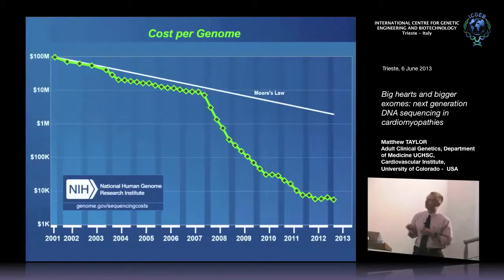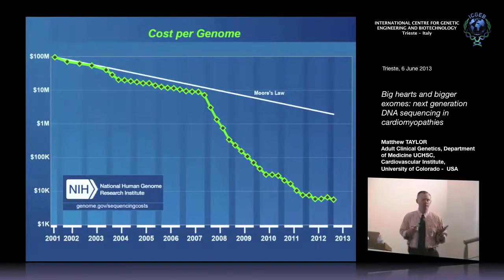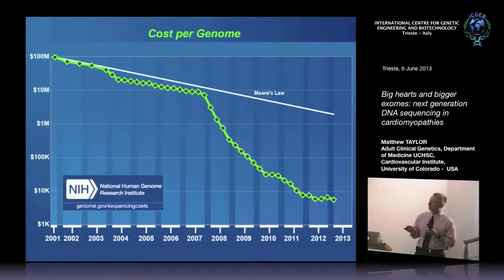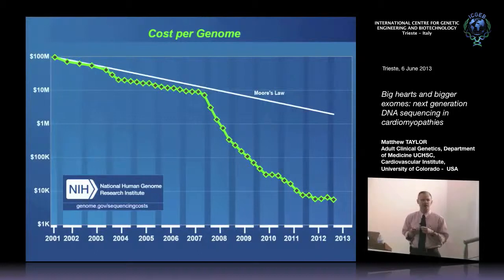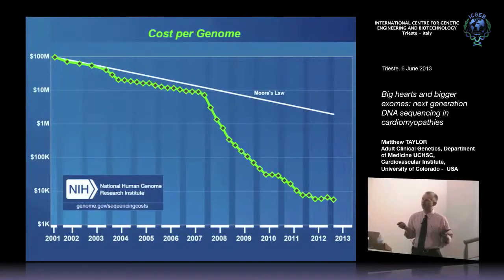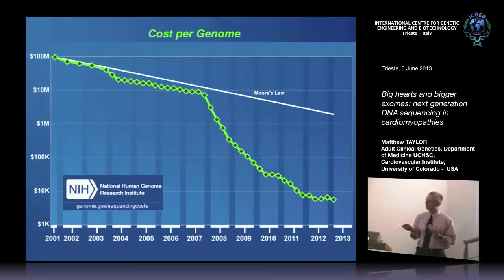The estimated cost to sequence a human genome has dropped dramatically from about $100 million in 2001. Around 2007 to 2008, new technology started to take off and costs got cheaper and cheaper. Now you can do an entire human genome for about $7,000 to $8,000, and an exome sequence for less than $1,000 — around 600 euros. It's likely to become almost free at some point, with drug or insurance companies potentially offering to sequence your genes for free to assess insurance risk or drug needs.